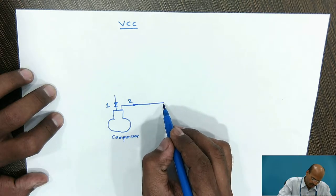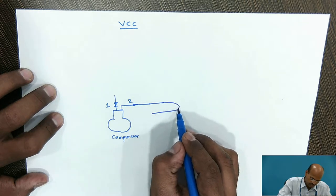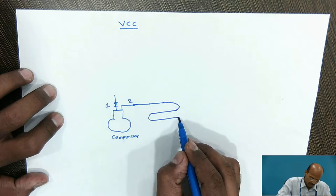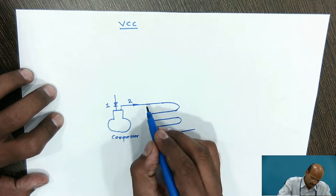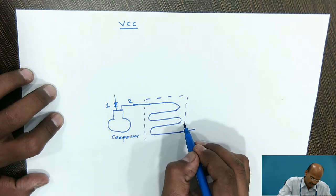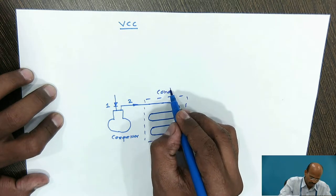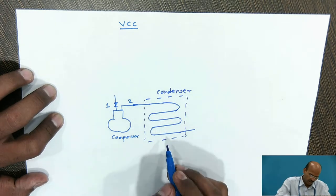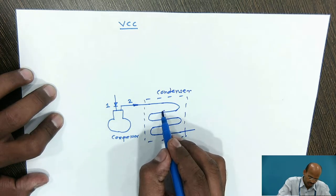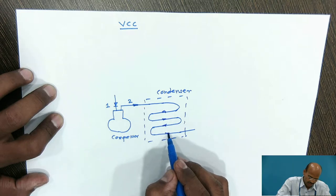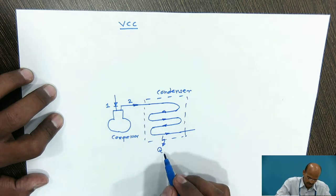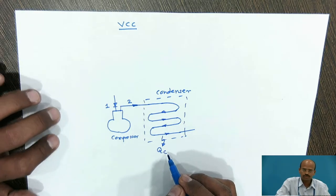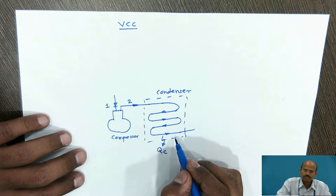This superheated steam is passed through the condenser. The condenser may be tube-in-tube type, shell-in-tube type, or shell-in-coil type. The second device is the condenser. As the superheated vapor flows through the condenser tubes, there will be heat rejection to the surrounding. The total amount of heat rejected by the superheated refrigerant is denoted by QC. The condensation process is an isobaric process — meaning constant pressure heat rejection.